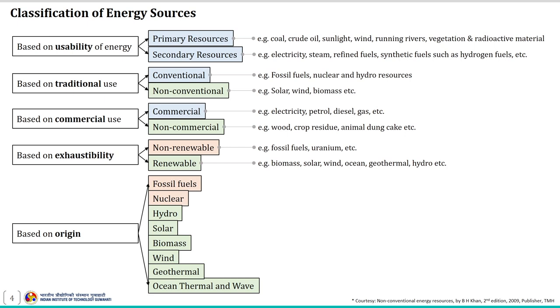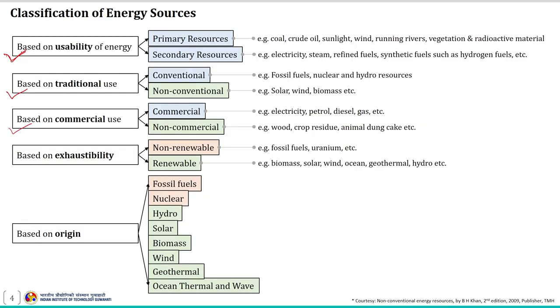Let us first discuss about the classification of energy sources. The sources which are broadly being used for large scale energy production are classified in the following ways: based on usability of energy, based on traditional use, based on commercial use, based on exhaustibility, and based on the origin.